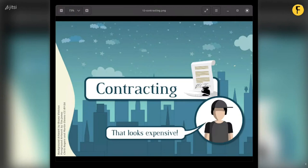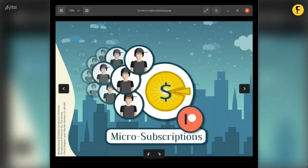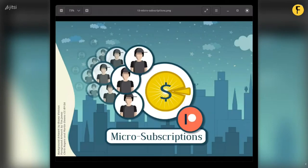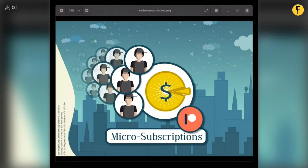But what about individual users — regular people who are not businesses? This is where micro-subscriptions come in. I currently use a system called Patreon. It's a proprietary service, and when I signed up I weighed the ethics of using it. The mechanics are simple: users who can't afford to give me a couple of thousand euros to fix a problem can band together, giving small amounts of predictable monthly income so I can continue to work on the software they need. The proportion doesn't have to be small — it can be as little as a dollar or as much as $100 a month.